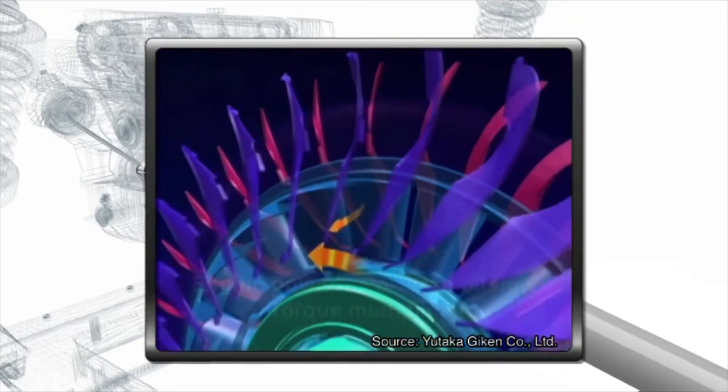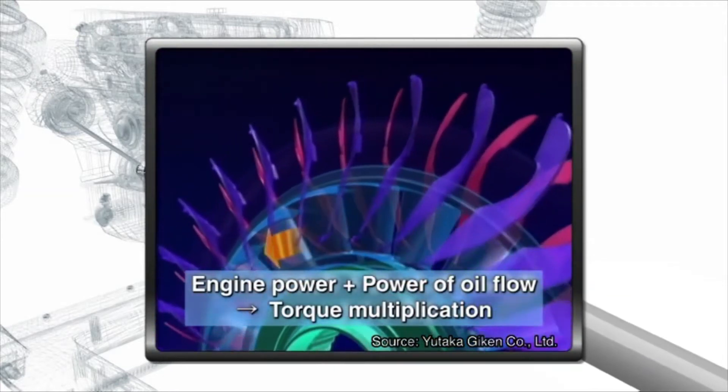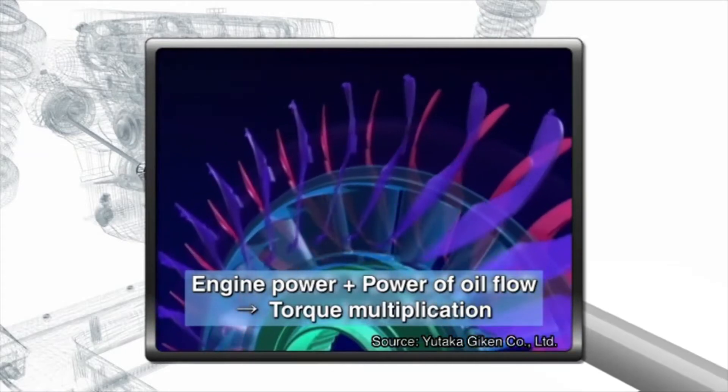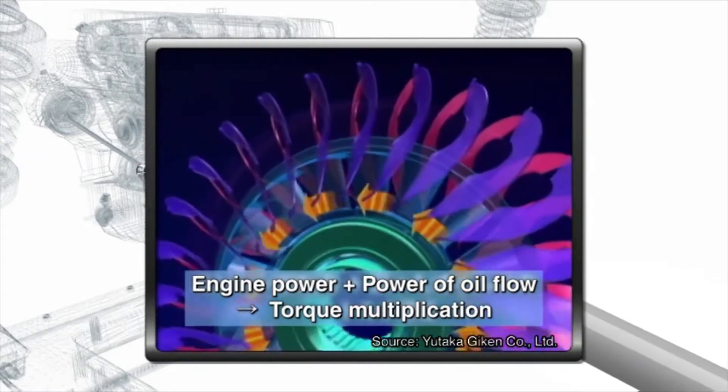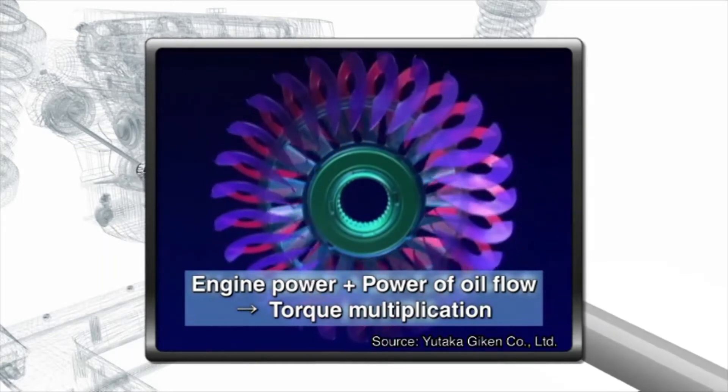When the pump impeller and the turbine runner rotate at substantially different speeds, torque is multiplied. When the rotational speeds are constant, torque multiplication is diminished.